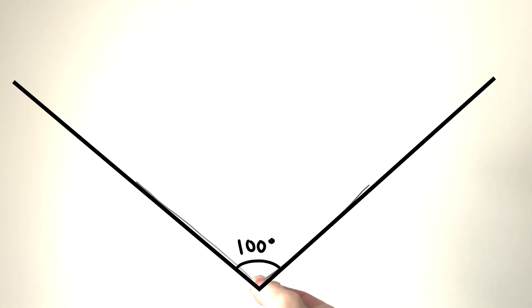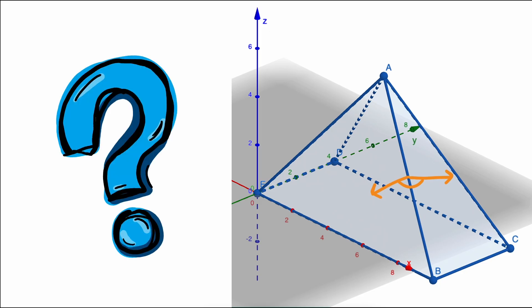But if I rotate it away, now it looks wider, more like 100 degrees. So how do we find the true angle for this edge?